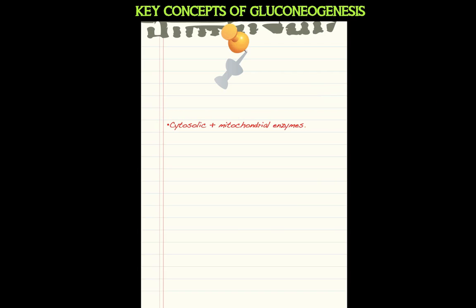Unlike glycolysis — where all enzymes are in the cytosol — gluconeogenesis is slightly different. It has enzymes in both the mitochondria and the cytosol. In fact, the first bypass reaction when you start gluconeogenesis takes place in the mitochondria, and then it finishes off in the cytosol. So gluconeogenesis involves both cytosolic and mitochondrial enzymes.